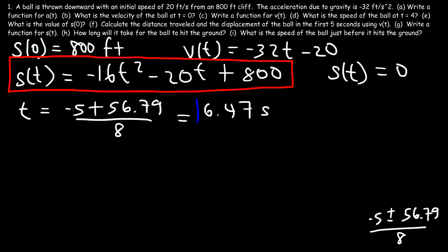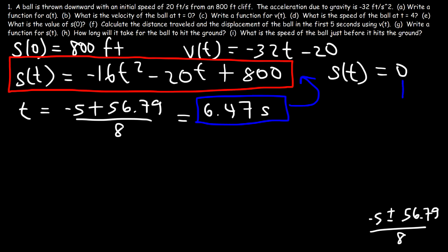That's approximately how long it takes for the ball to hit the ground. Plugging 6.47 into s of t gives approximately negative 16 times 6.47 squared minus 20 times 6.47 plus 800, which gives roughly 0.8256 — close to 0, as expected from rounding. Using the more precise value 6.473, the result equals 0. So the answer is confirmed.